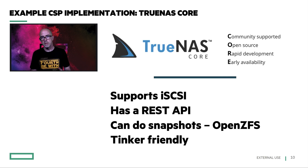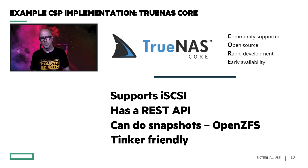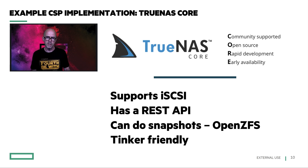The example CSP implementation is built around TrueNAS Core — the successor to FreeNAS, a tinkerer-friendly NAS appliance. It supports iSCSI, has a REST API, can do snapshots with the help of OpenZFS, and you can install it in a VM and be up and running in minutes. Since this is an open-source project, I thought it was a good candidate to write a container storage provider for and prove the point that the HPE CSI driver is a multi-platform, multi-vendor driver.